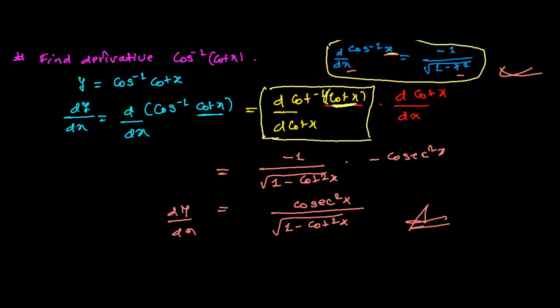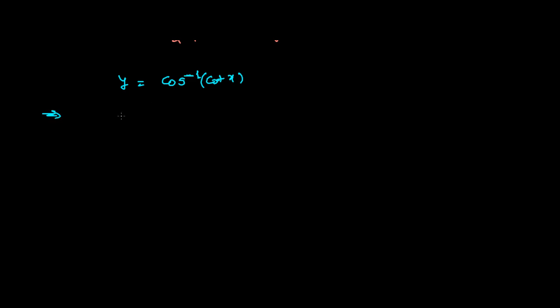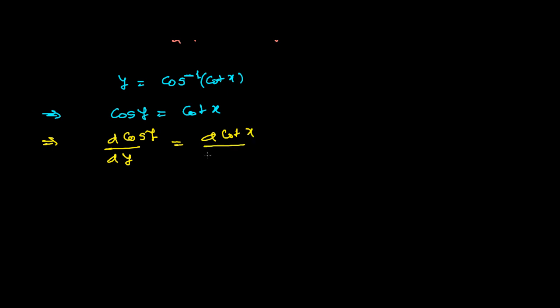Our function was y equals cos inverse of cot x. If you don't know the formula, you can still solve it. Since cos is in inverse, when it goes to the left-hand side, it becomes cos y equals cot x. Now differentiate both sides with respect to y. You might be asking why we differentiate with respect to y instead of x — the reason is we'll get dx/dy here, and later we'll take the reciprocal to convert it into dy/dx. This is the approach we've been following in many previous videos.